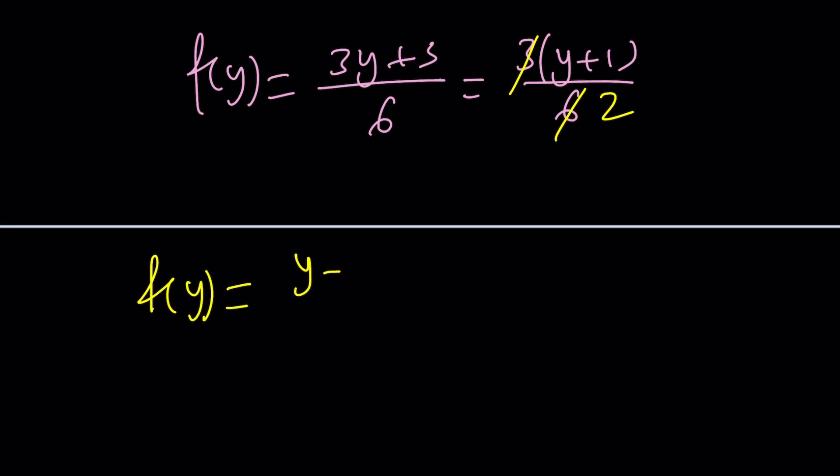And guess what that gives you? That gives you f of y equals y plus 1 over 2, which implies f of x equals x plus 1 over 2. Because these are dummy variables, and you can pretty much discard them and use another one, because it's the same thing.